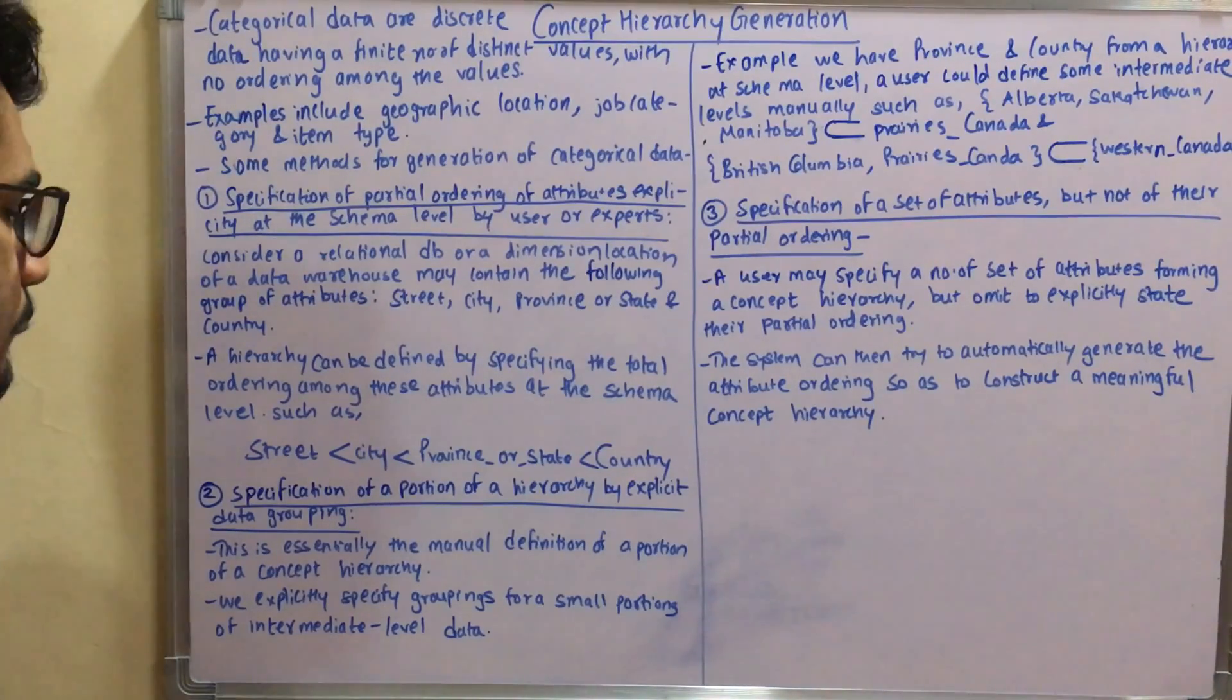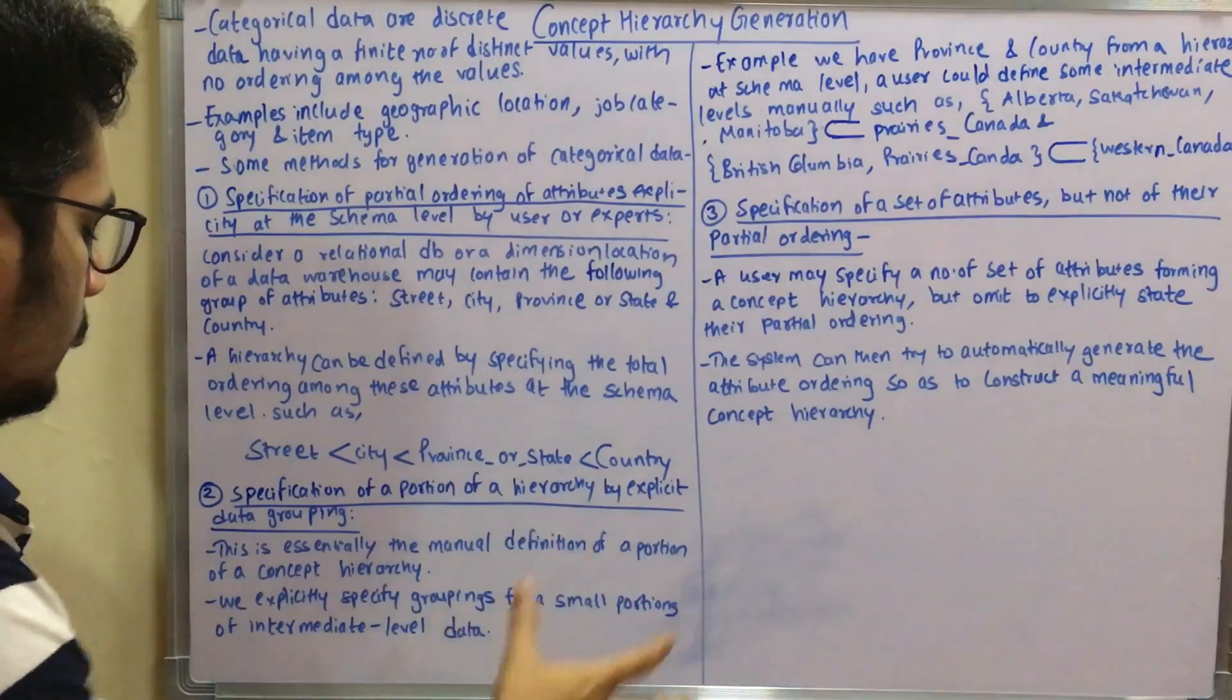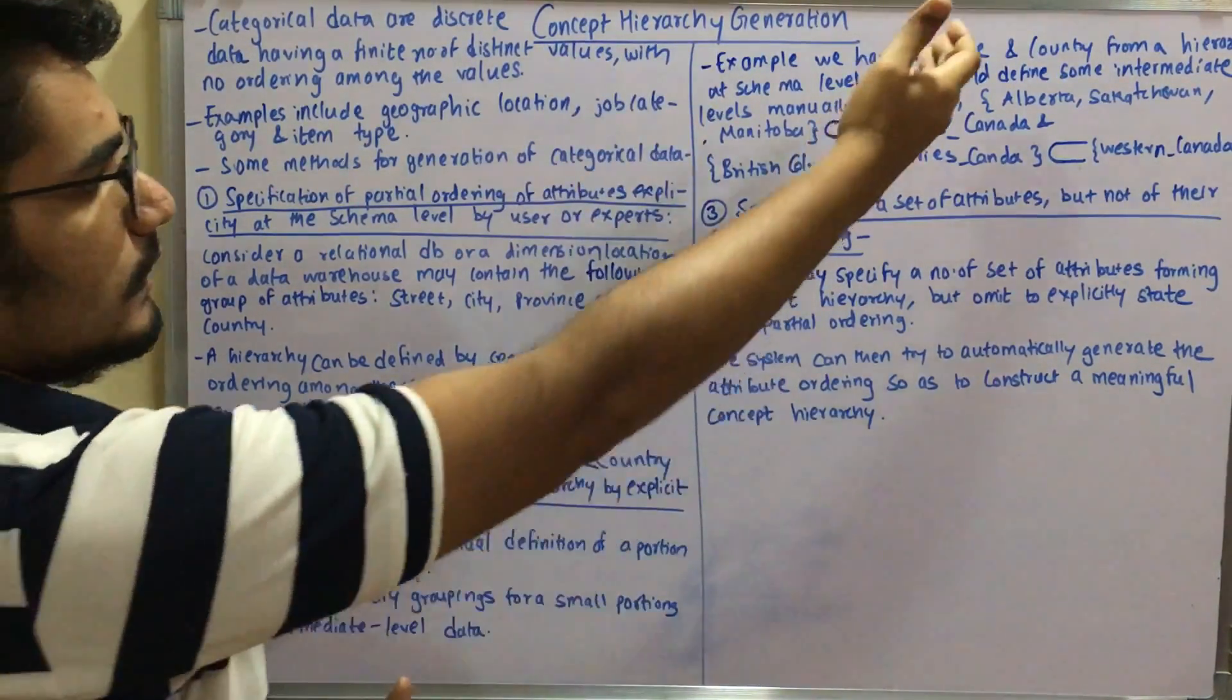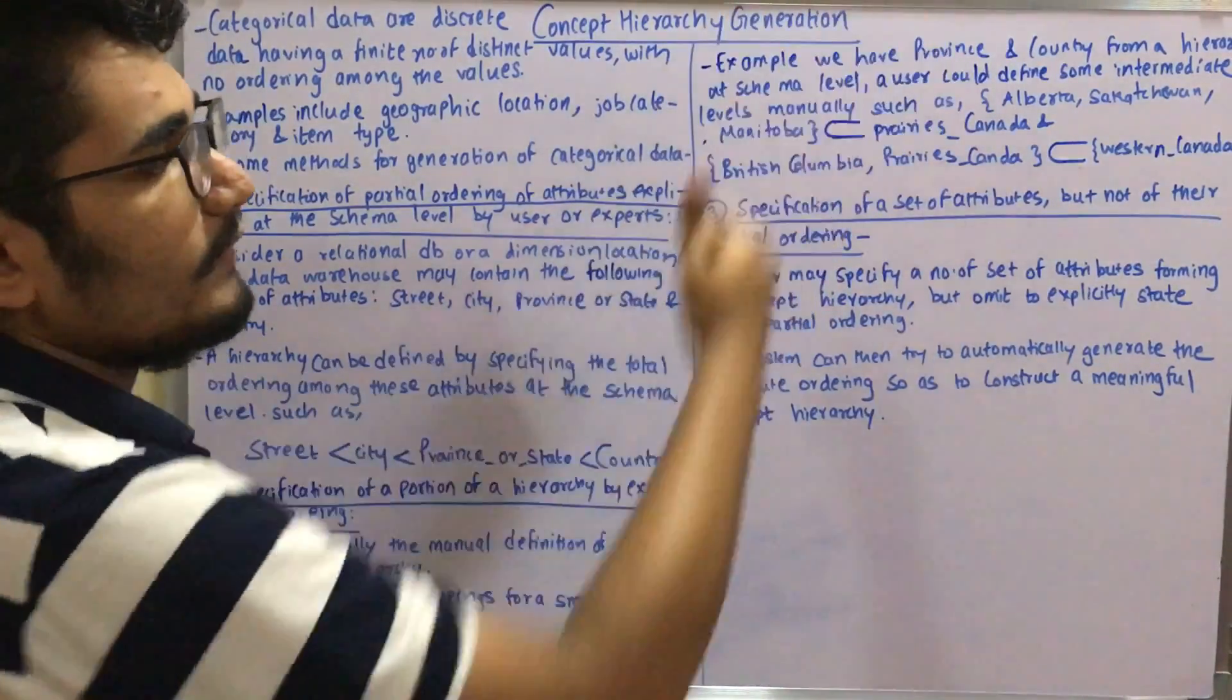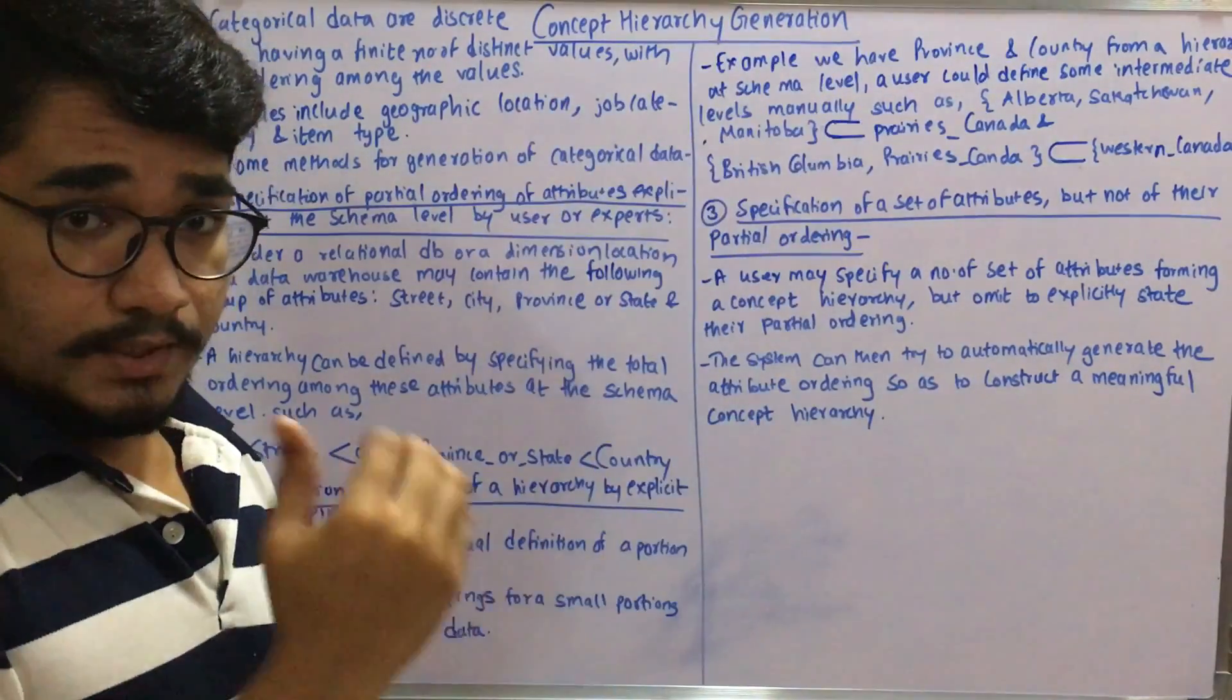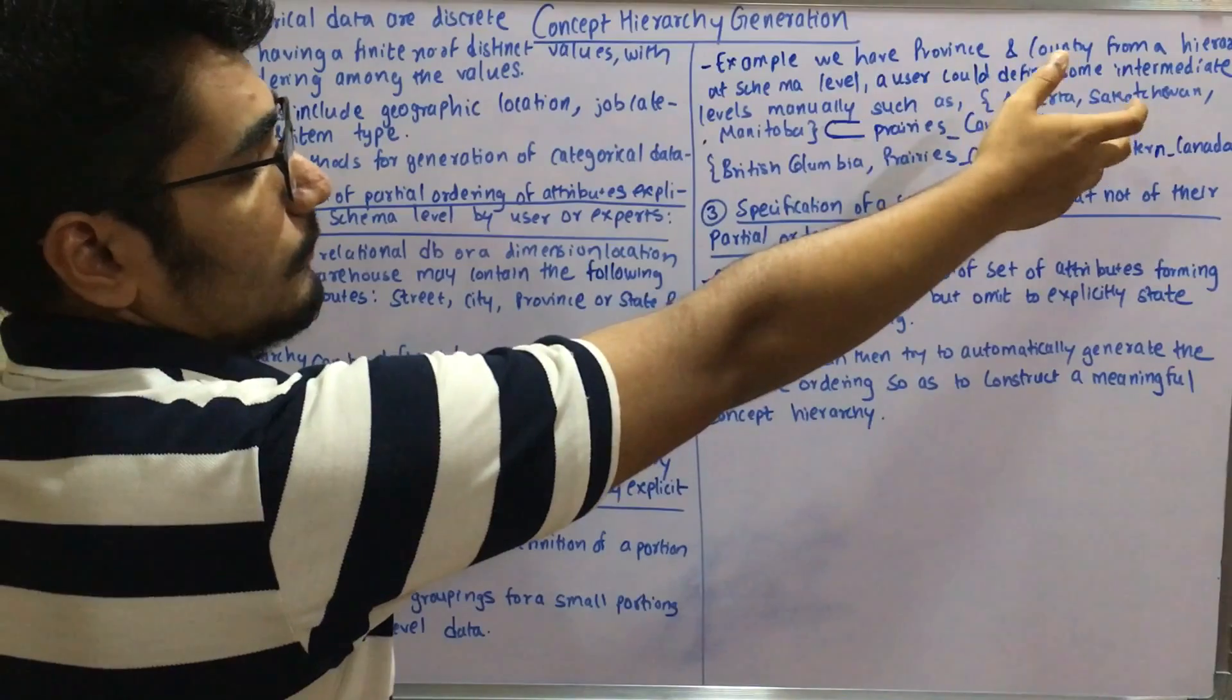There's no particular default definition but what the user actually creates in a particular manner. We explicitly specify groupings for small portions of intermediate data levels. For example, for province and country in a hierarchy at the schema level.